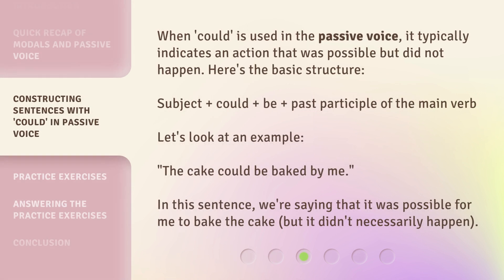When 'could' is used in the passive voice, it typically indicates an action that was possible but did not happen. Here's the basic structure: Subject + could + be + past participle of the main verb. Let's look at an example: 'The cake could be baked by me.' In this sentence, we're saying that it was possible for me to bake the cake, but it didn't necessarily happen.